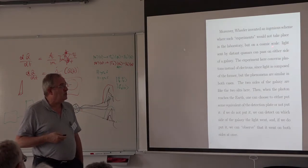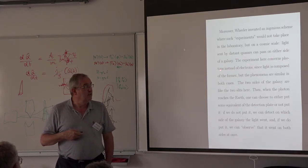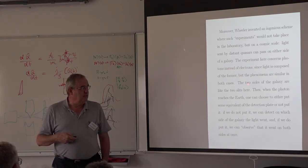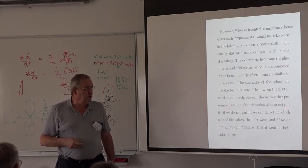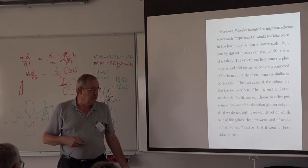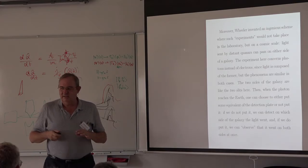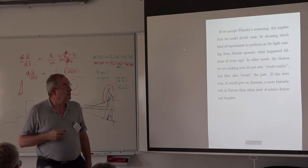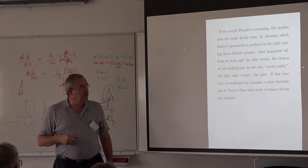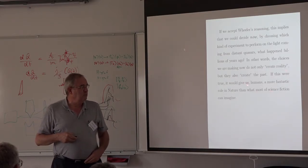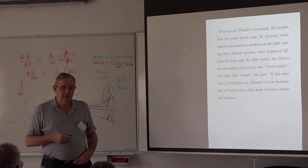Wheeler invented an ingenious scheme where this experiment would be performed not in a laboratory but on a cosmic scale. Light emitted by distant quasars can pass on either side of a galaxy — the two sides of the galaxy are like the two slits. When the photon reaches Earth, you can either put some equivalent of the detection plate or not. If you do not put it, you can detect on which side of the galaxy the light went; if you do, you can observe that it went on both sides at once. So you're not only influencing the past in the laboratory, but billions of years ago. The choices we make now not only create reality, but also create the past — which would give us humans a more fantastic role in nature than most science fiction can imagine.